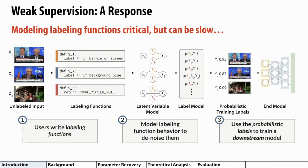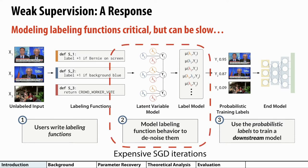Now, modeling labeling function behavior is a key part of this process, but it can be slow. In particular, it requires solving the parameters of a latent graphical model by optimizing a loss function using multiple iterations of stochastic gradient descent.